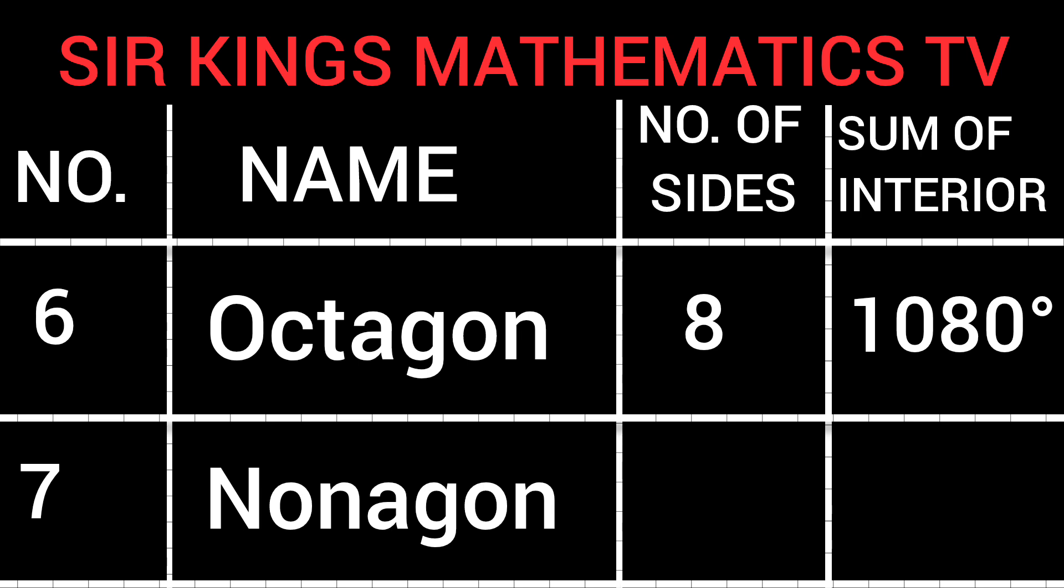Nonagon: Number of sides 9. Sum of interior angles 1,260 degrees.